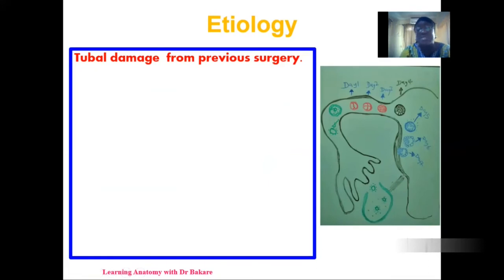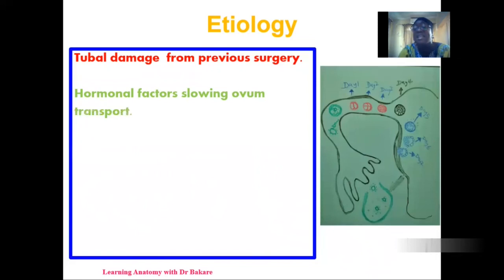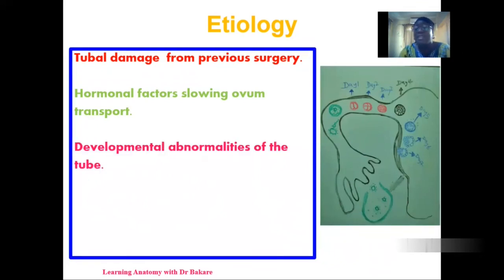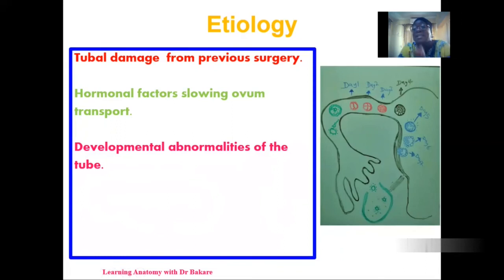The etiology of ectopic pregnancy can include tubal damage from previous surgery, or hormonal factors — when hormones are not secreted normally, it can affect the rate at which the egg is transported, causing implantation in the wrong region. Developmental abnormalities such as tubal stenosis, a narrowing of the lumen of the fallopian tube, can also prevent the fertilized egg from passing through to the uterus, causing it to be implanted where it is entrapped.